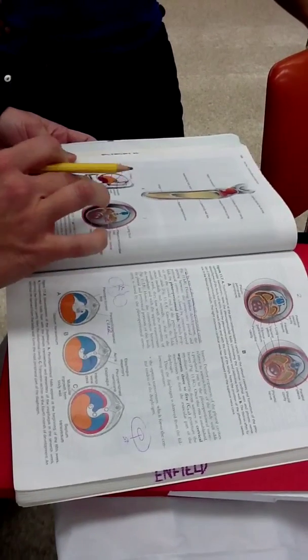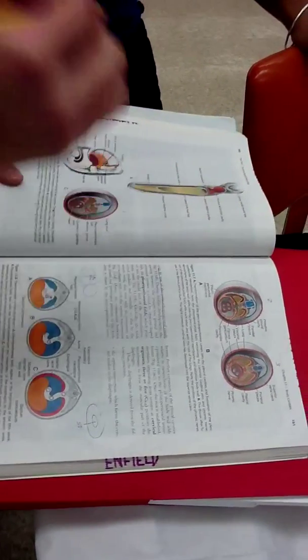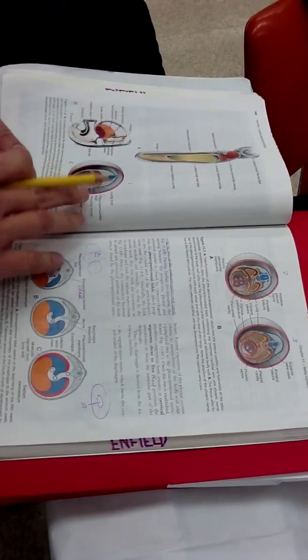And so now this is going to split the thoracic cavity into two pleural cavities and the pericardial cavity. Right, okay, that makes sense.